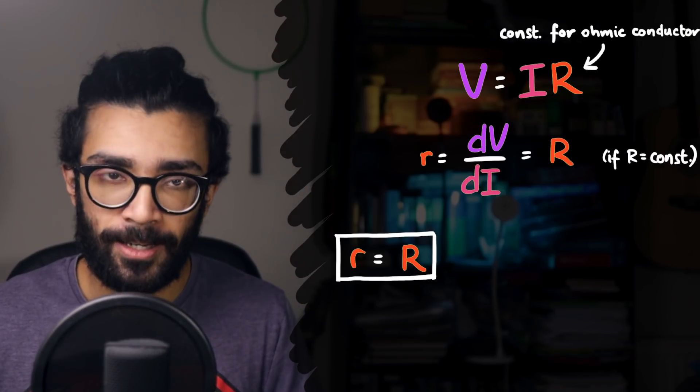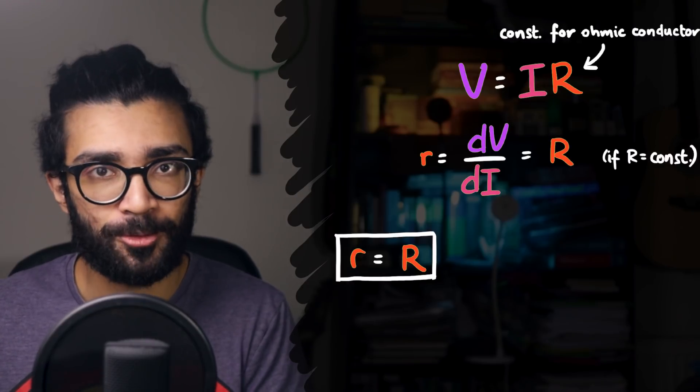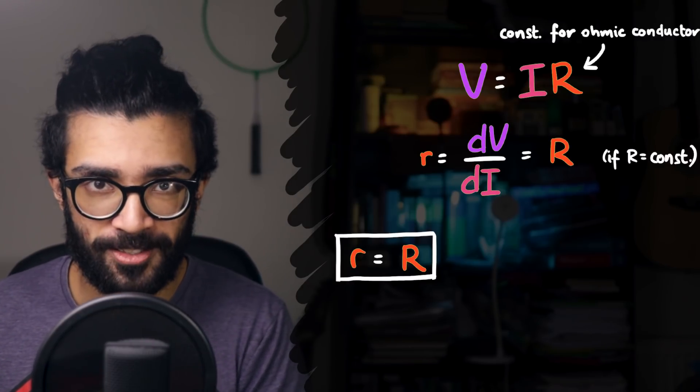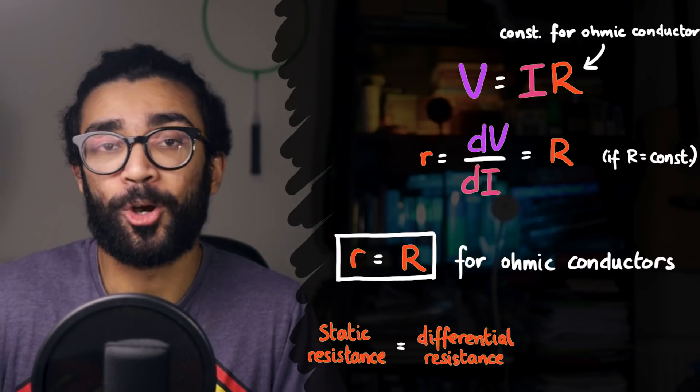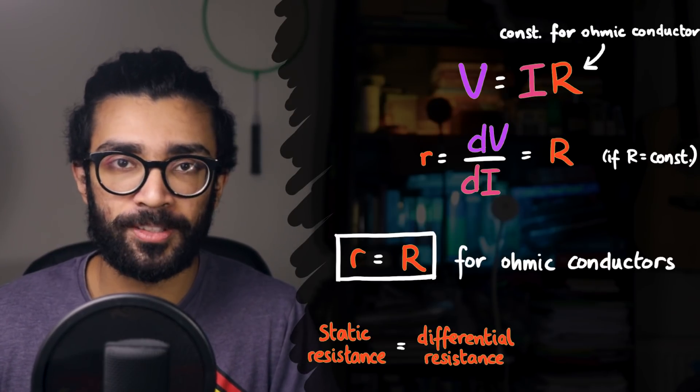And therefore, in this particular case, dV/dI, the differential resistance, is equal to V divided by I, the static resistance. Because these two quantities are the same, for an ohmic conductor, we just call them both the resistance.